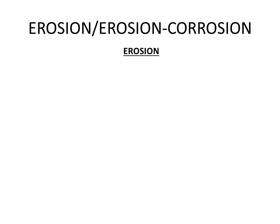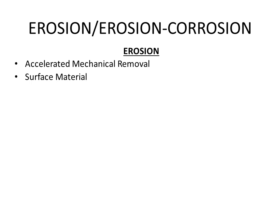We will consider the first one: erosion. What is erosion? You may have heard of soil erosion — the same thing happens to materials when fluid flows through or above them. Open your codebook and read the damage description for erosion. From that description, you can see two key words: accelerated mechanical removal of surface material.